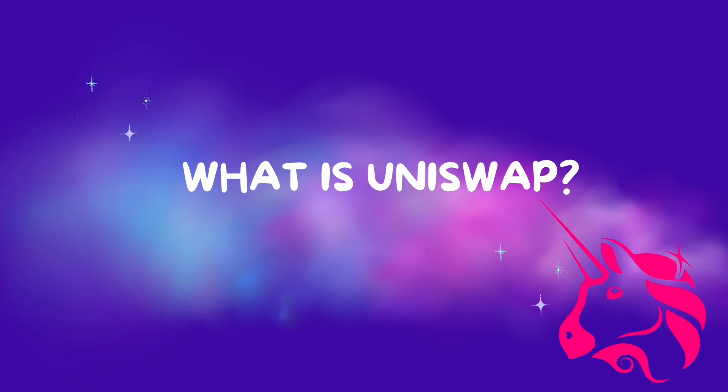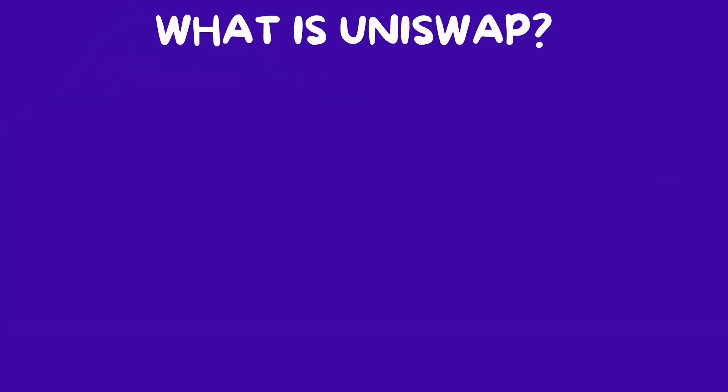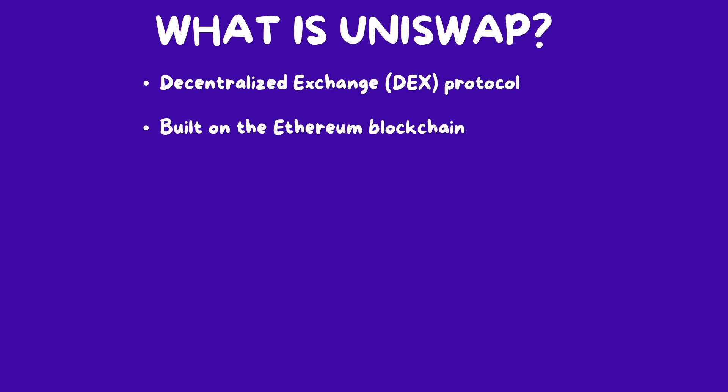First of all, what is Uniswap? Uniswap is a decentralized exchange protocol built on the Ethereum blockchain. It is owned and operated by a single entity. Uniswap allows users to trade cryptocurrency directly without going through middlemen. You may ask, how does this work?